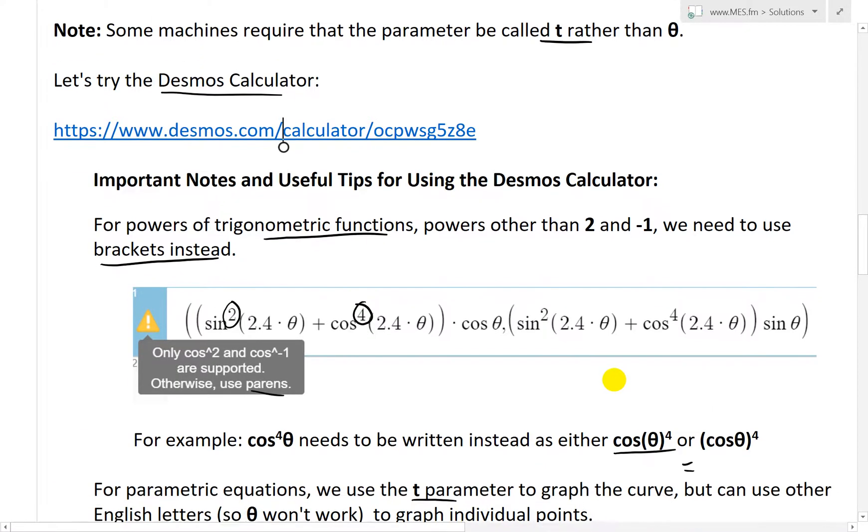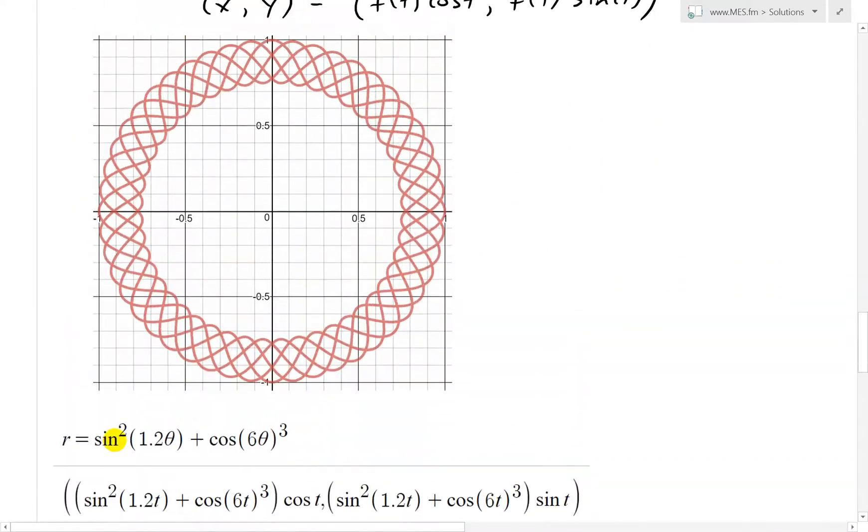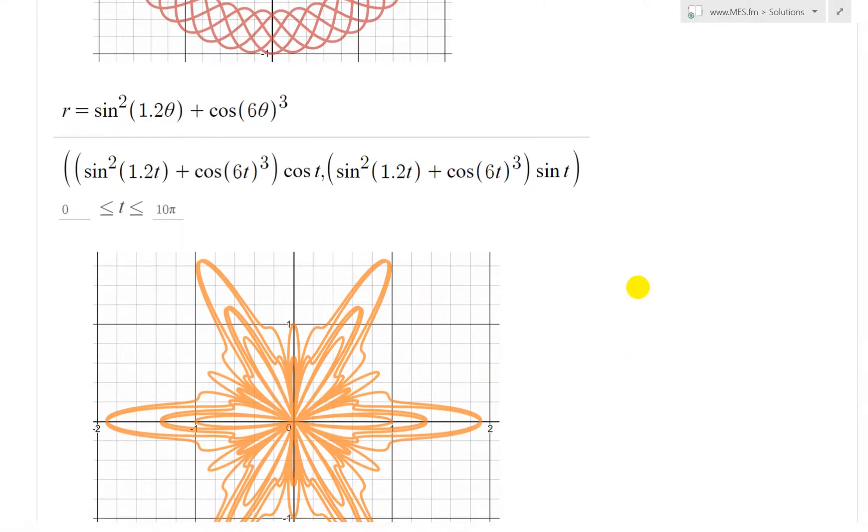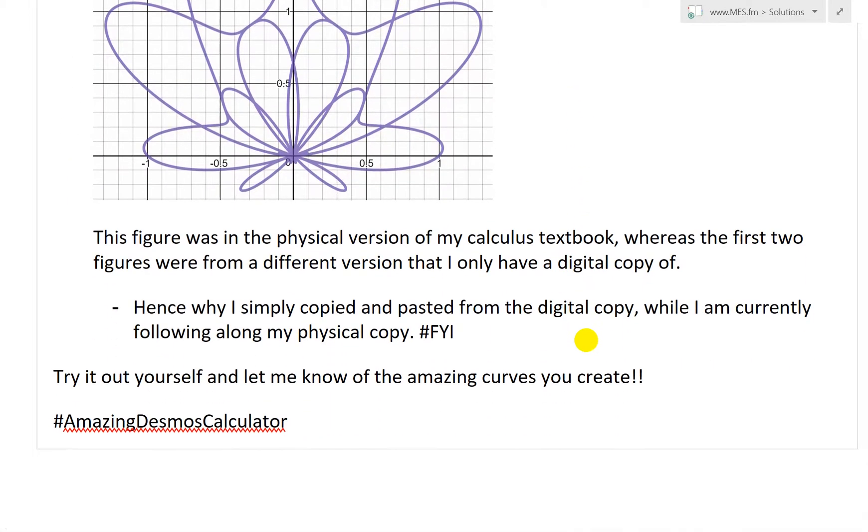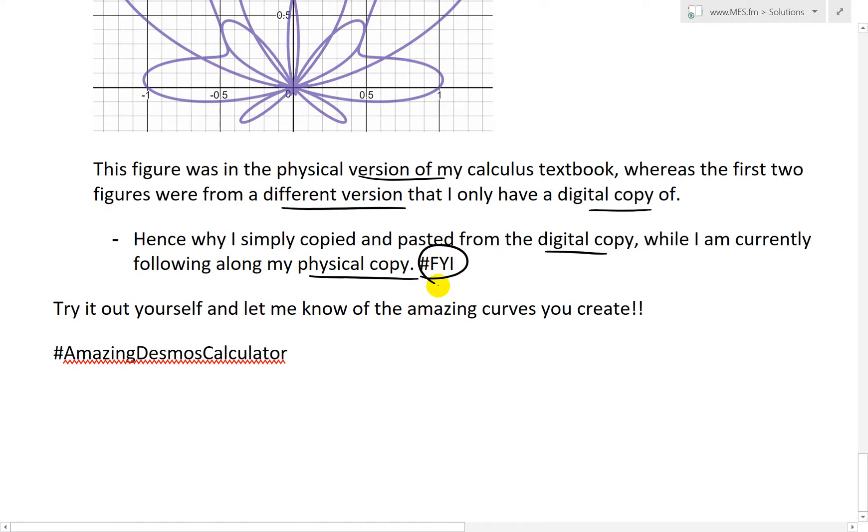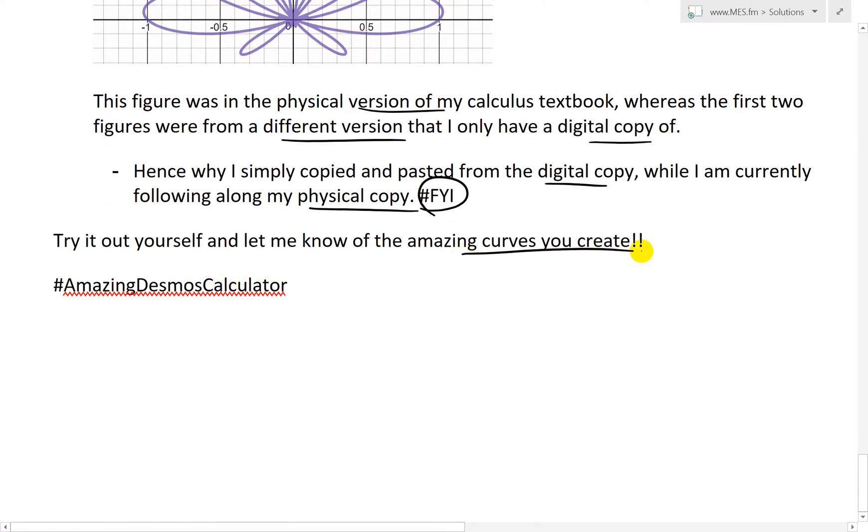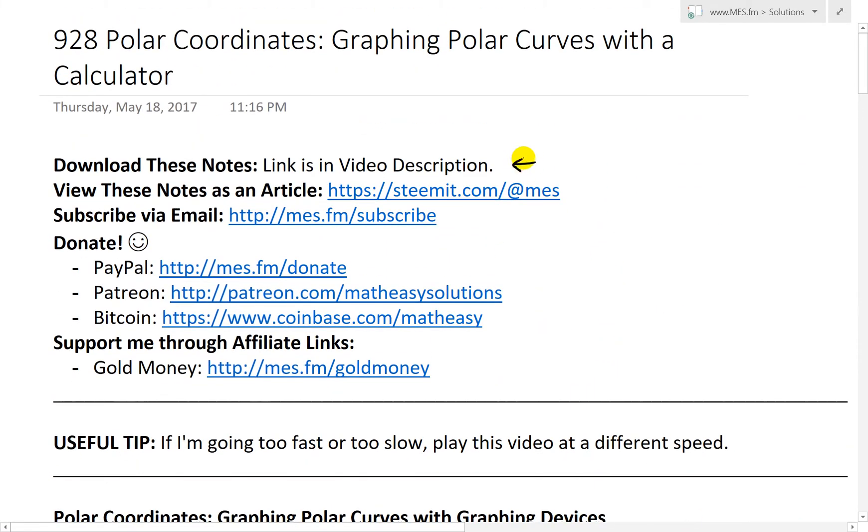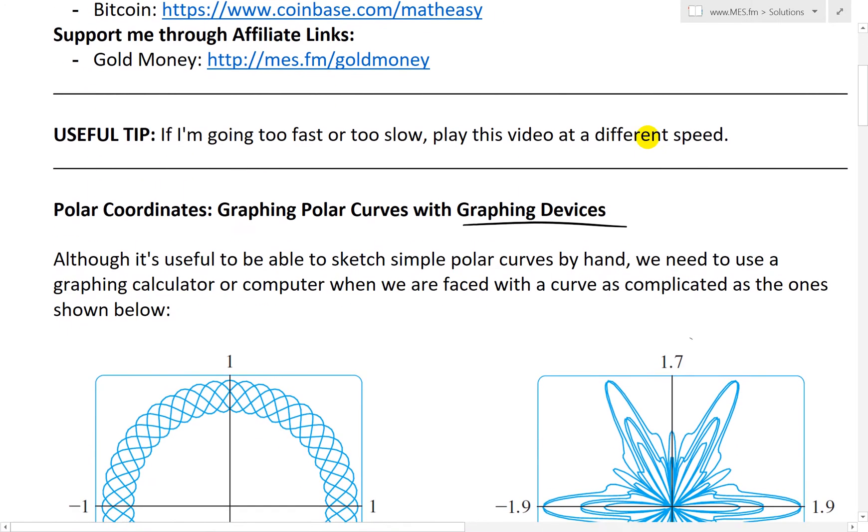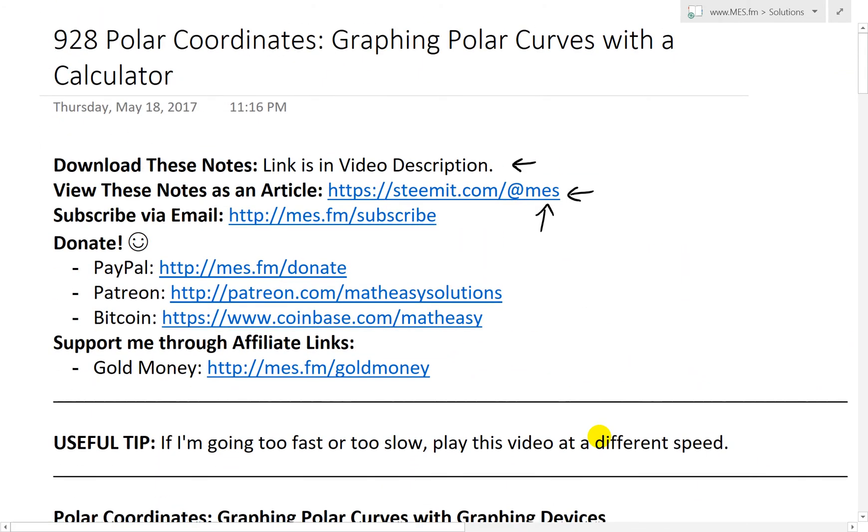So that's that. The rest of this, I took a screenshot and put it all here. We have the ring there, that star shape, written in both parametric and polar form. We also have this leaf shape. This figure was in the physical version of my calculus book, whereas the first two figures were from a different version that I only have a digital copy of. Hence why I simply copied and pasted from the digital copy while I'm currently following along my physical copy. Hashtag FYI. Try it out for yourself. Let me know of the amazing curves you create. Hashtag Amazing Desmos Calculator. That's all for today. Hopefully you enjoyed this. You can download these exact notes in the link below. You can also view these as an article at steemit.com, my username is at MES. I'll post these shortly after I upload this video. Let me know some of the stuff you make. Thanks for watching and stay tuned for another Math Easy.